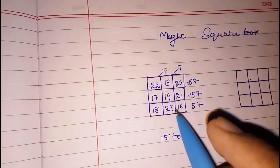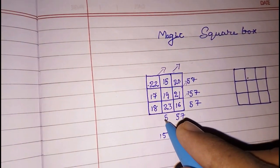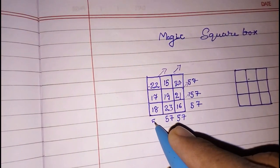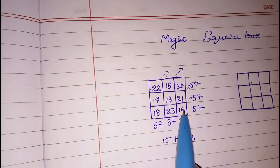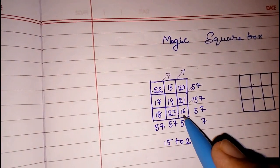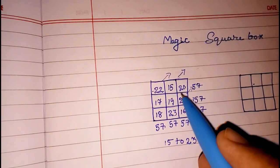This way also 57, this way also 57, 57. You can add like this also, 9 plus 2, 11, 6, 17 carry 3, 4 and 5, 57.